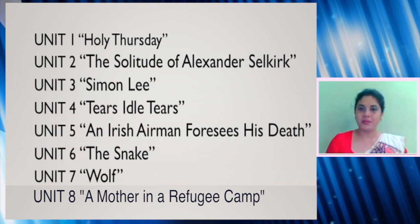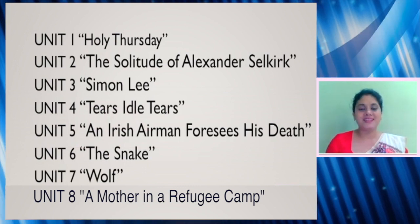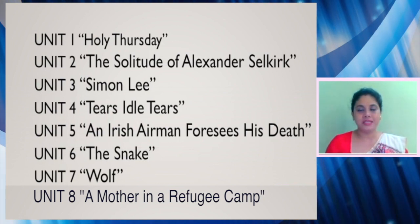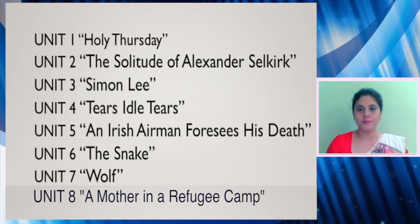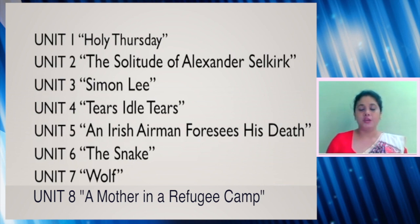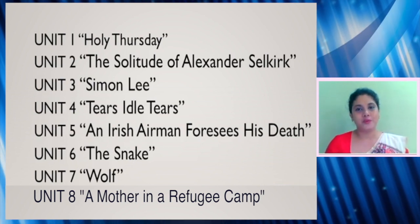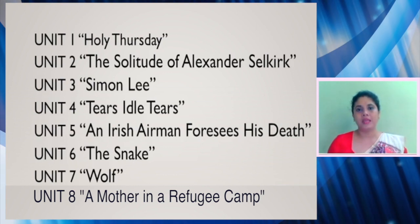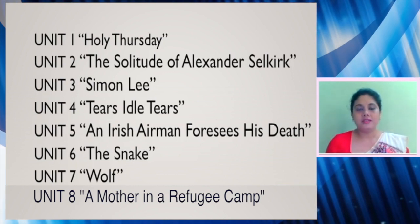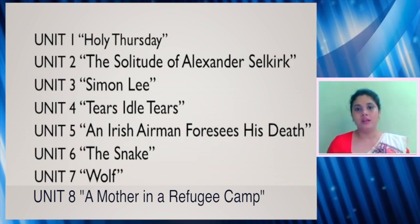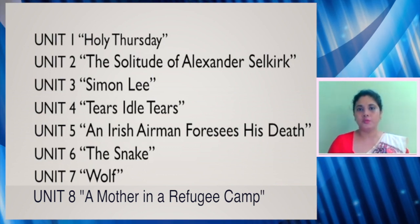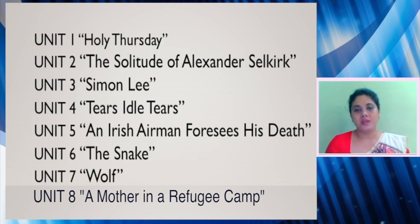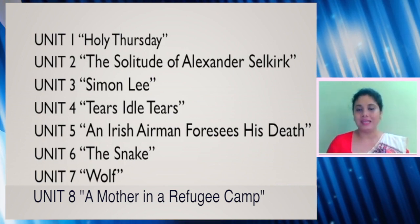Block one contains a total of eight poems. The first unit deals with William Blake's poem Holy Thursday, which has been taken from his famous poetry collection Songs of Innocence. It unravels the untold stories of little orphaned children who spent their childhood days in orphanages and charity homes in England.